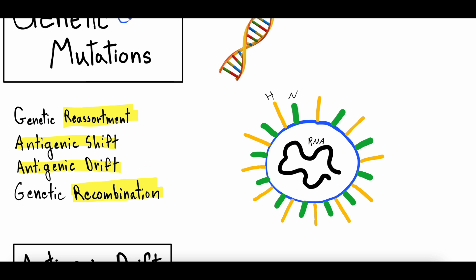That's in comparison to antigenic shift, which is when there's some event that causes a big shift. If the virus has 10 proteins, that virus in the snap of its fingers all of a sudden has five different proteins — half of their proteins are different. So when there's antigenic shift, it's a big change. When there's antigenic drift, it's a small change.